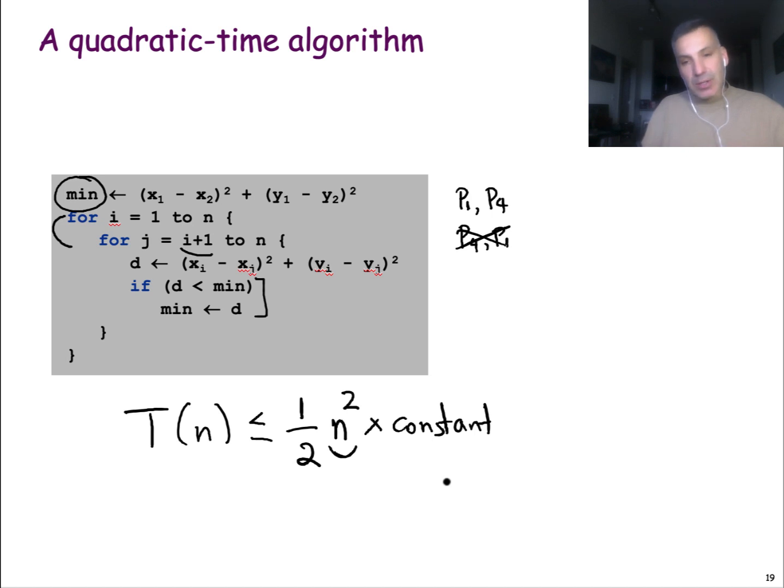Now later in the course, we will see a better algorithm that can actually run in time that is not quadratic, but it is what we call n log n, which means that in that case the running time is upper bounded by a function that looks like n times log n times a constant. But that will be discussed much later in the course.